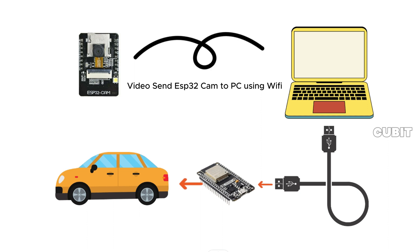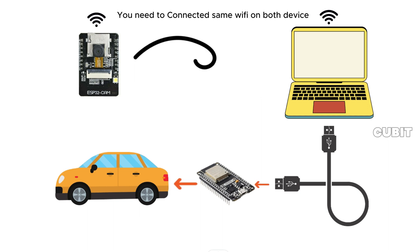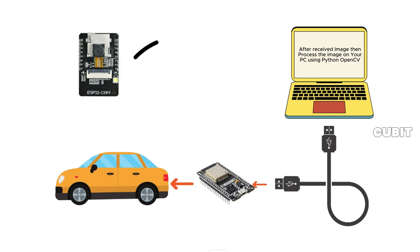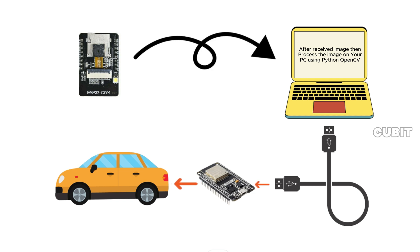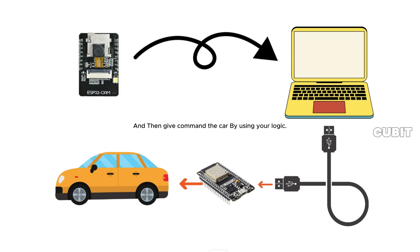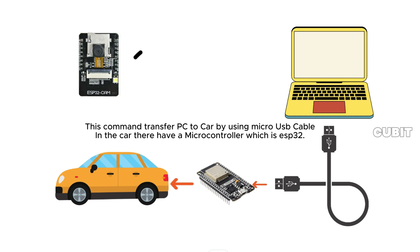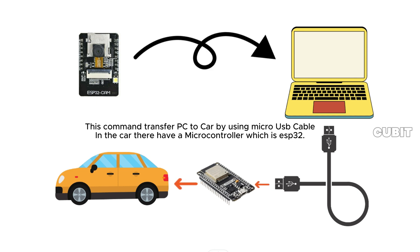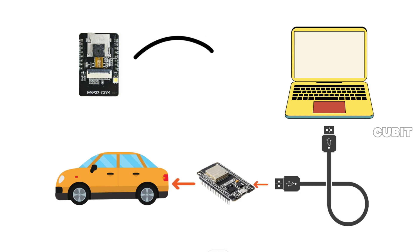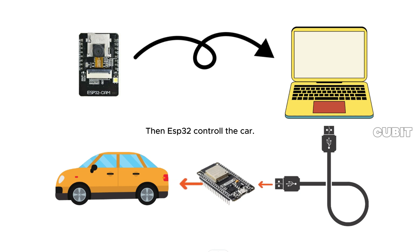Video: Send ESP32 Cam to PC using Wi-Fi. You need to connect both devices to the same Wi-Fi. After receiving the image, process it on your PC using Python OpenCV. Then give commands to the car using your logic. This command transfers from PC to car by using a micro USB cable. In the car there is a microcontroller which is ESP32, and then ESP32 controls the car.